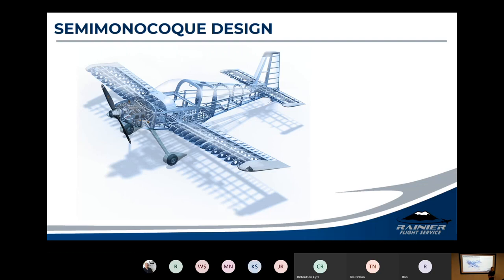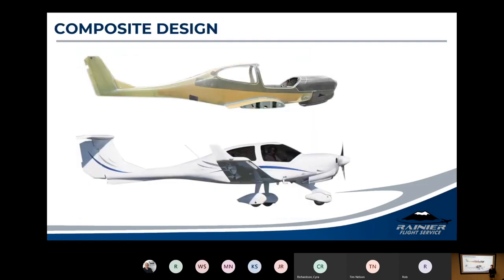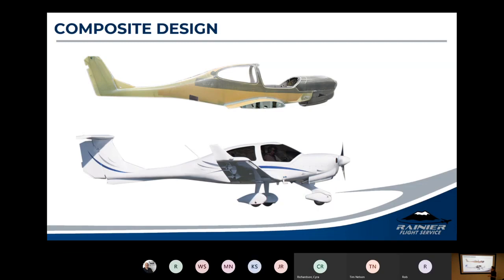Most general aviation airplanes — Pipers, Cessnas, anything built in the last 60 years — use the semi-monocoque design. Planes built in the last 10 to 20 years get to a composite design, which is more of a monocoque design. We've figured out how to use resins, carbon fibers, and that sort of stuff so the structure is maintained by the skin. A composite airplane is really just like a surfboard — it's a fabric, usually fiberglass, or carbon fiber if more expensive. They infuse it with resin; the mixture of the brittle-but-hard resin and the strength of the fiber creates the fuselage design.